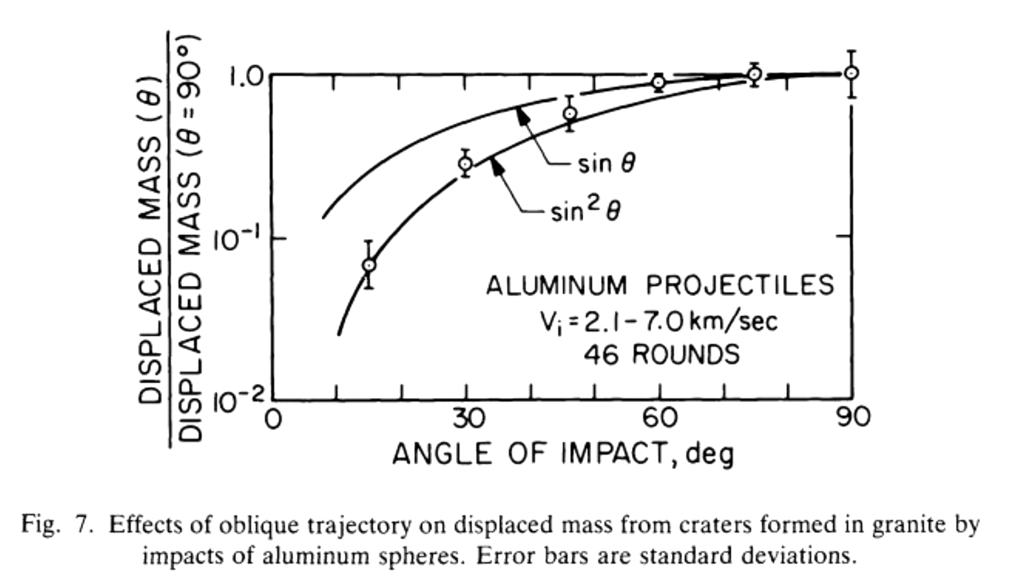Lowering the impact angle does reduce the amount of material thrown out of the crater. So by the time you're down to a 20-degree impact, then you're throwing out one-tenth of what you get from a 90-degree impact. But remember the mass of the ejecta thrown out is roughly proportional to the cube of the radius. So this is actually only a factor of about 2 in the diameter.